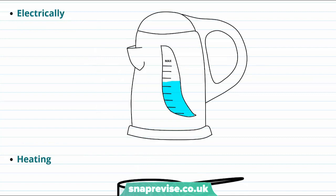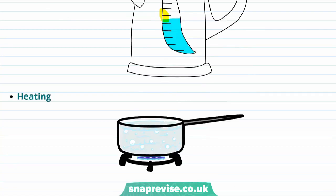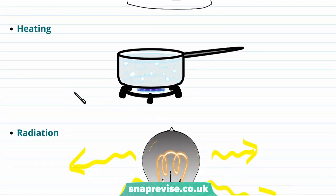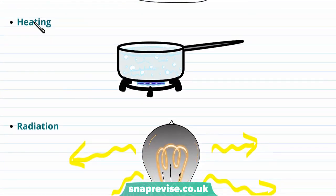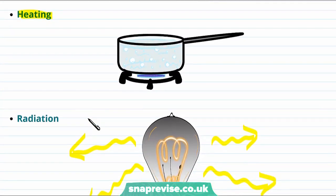Another way we can transfer energy is electrically. For example, a kettle uses electricity to heat up the water inside it to boil it. Another way that we can transfer energy to a system is by directly heating it. For example, we can use a gas fire to boil the water in a pan.